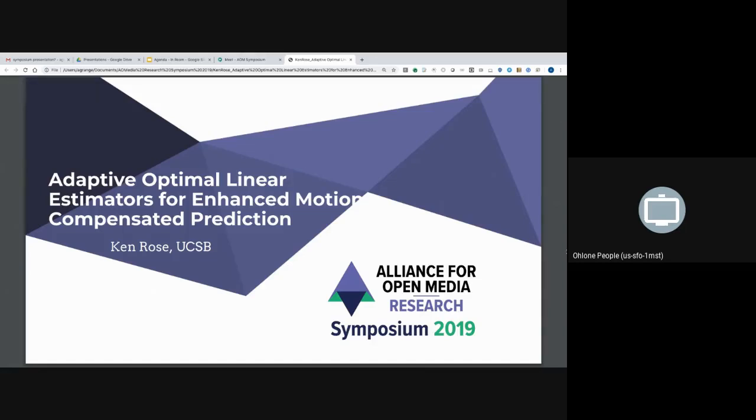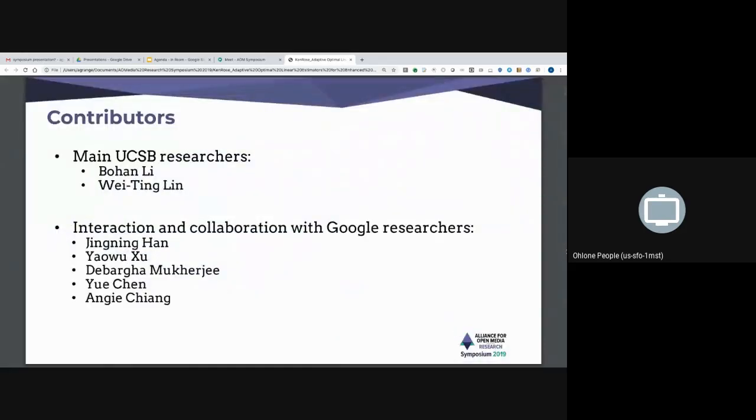Hello, I'm Ken Rose from UC Santa Barbara and this talk is about ways that optimal linear estimators can help with motion compensated prediction. The main contributors are my two ex-students Bohan and Wei Ting. Bohan is here, he's gonna come to my rescue if you ask really tough questions. We have collaborations and interactions with a number of Google researchers including Jingning, Yawu, Adebarga, Yue and Angie.